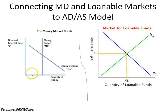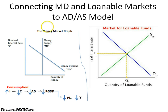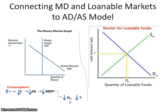When the nominal interest rate increases, which component of AD is affected — C, I, G, or XN? The answer is C, consumption. An increase in the nominal interest rate causes a decrease in consumption, which decreases aggregate demand, which decreases real GDP, lowering both the price level and output in the AD-AS model.